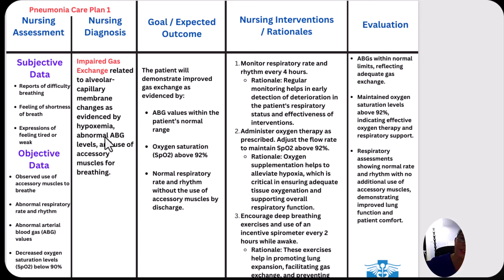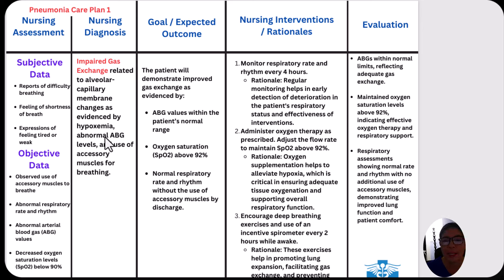Our nursing diagnosis would be impaired gas exchange related to alveolar capillary membrane changes as evidenced by hypoxemia, abnormal ABG levels, and the use of accessory muscles for breathing. The goal or expected outcome would be: the patient will demonstrate improved gas exchange as evidenced by ABG values returning to normal limits for the patient, O2 sat above 92%, and normal respiratory rate and rhythm without the use of accessory muscles by discharge.